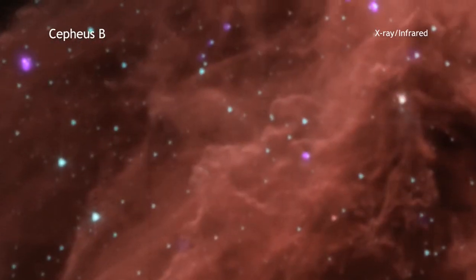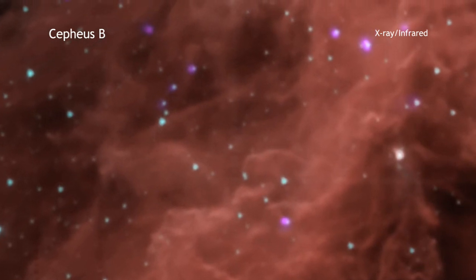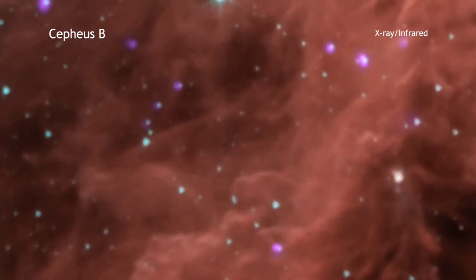While astronomers have long understood that stars and planets form from the collapse of a cloud of gas, the main causes of this process have remained mysterious.